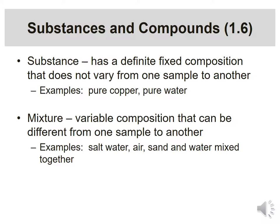Going further, we distinguish between pure substances and mixtures. A pure substance has a definite, fixed composition that doesn't vary from one sample to the other — for example, pure copper or pure water always has the same composition. A mixture can have a variable composition, different from one sample to another. Think about salt water — you can put different amounts of salt into water and have different compositions. It's a mixture.